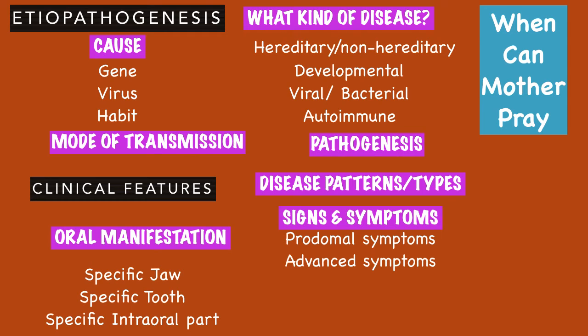Mentioning this in the exam helps the examiner understand that you have studied the subject really well. After covering oral manifestations, never forget to mention the pathognomonic features and keywords of the disease — for example, the Shepherd's Crook appearance of the femur in fibrous dysplasia.